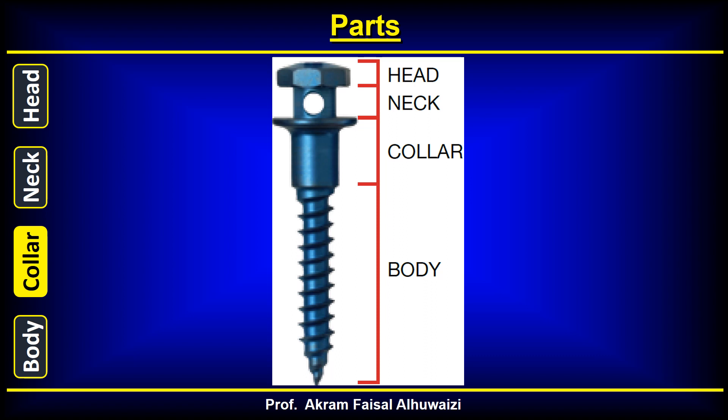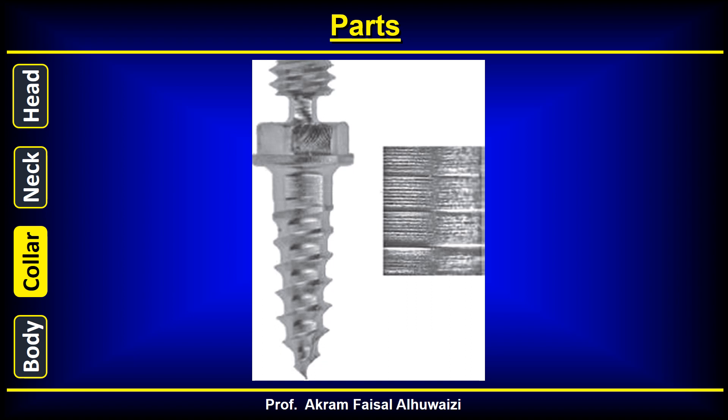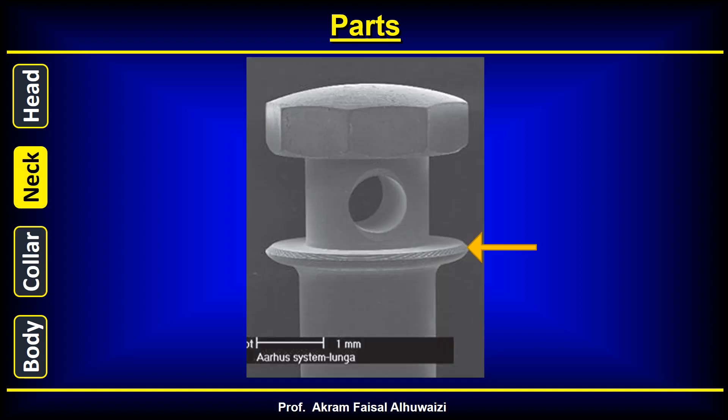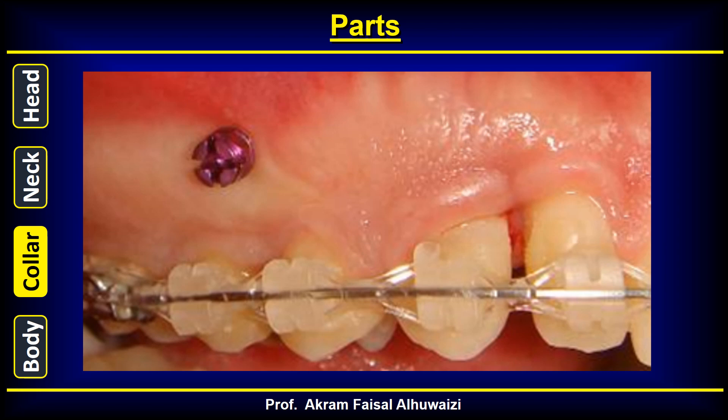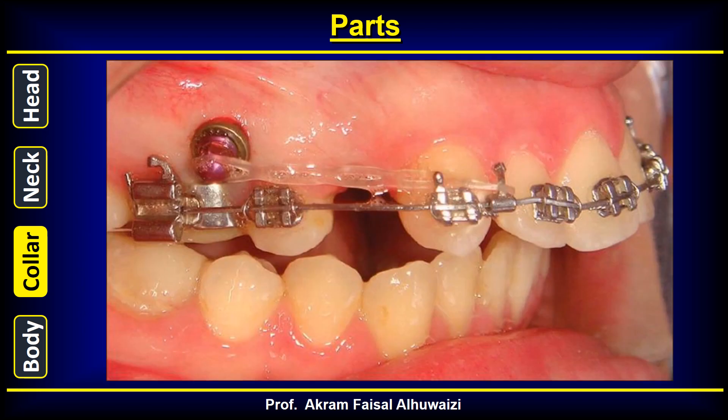The collar is wider than the body, serving as a definitive stop so it does not insert into the bone. It is usually highly polished because it sits inside the mucosa — hence commonly called the transmucosal collar. Some collars have small serrations claimed to improve epithelial adhesion. They end with a small platform that presses on the soft tissue and prevents overgrowth. Some implants also accept an add-on ring acting as a platform to further prevent soft tissue overgrowth.